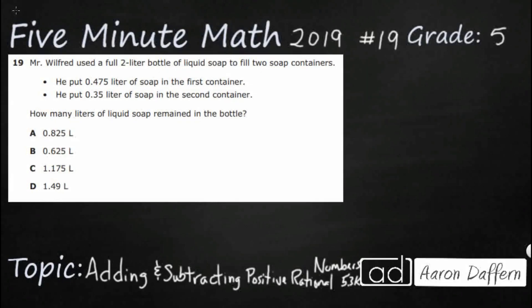Hello, and welcome to 5-Minute Math. Today we are looking at the 5th grade concept of adding and subtracting positive rational numbers. This is standard 5.3k in the great state of Texas, and we are using item number 19 of the 2019 released STAAR test.